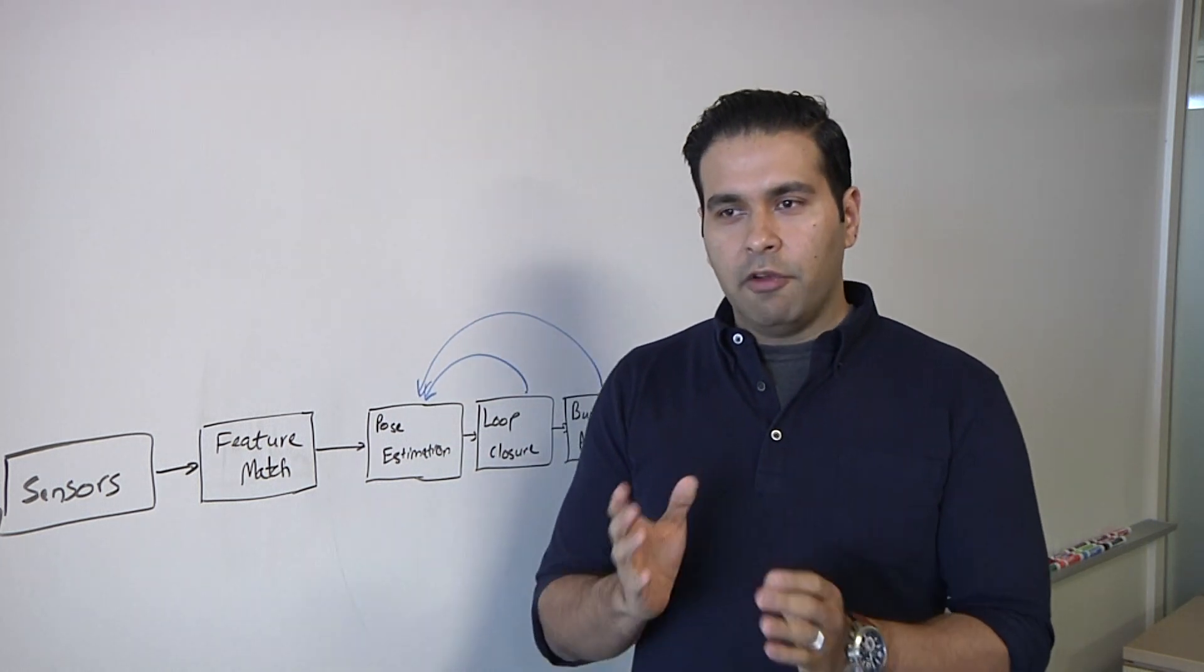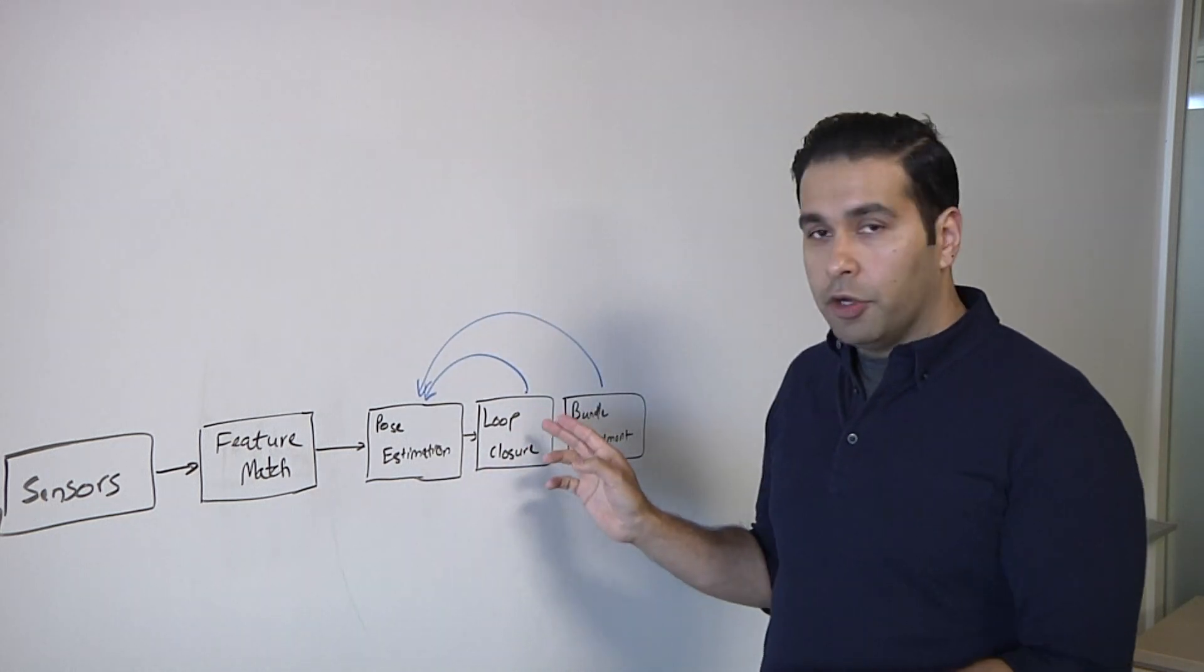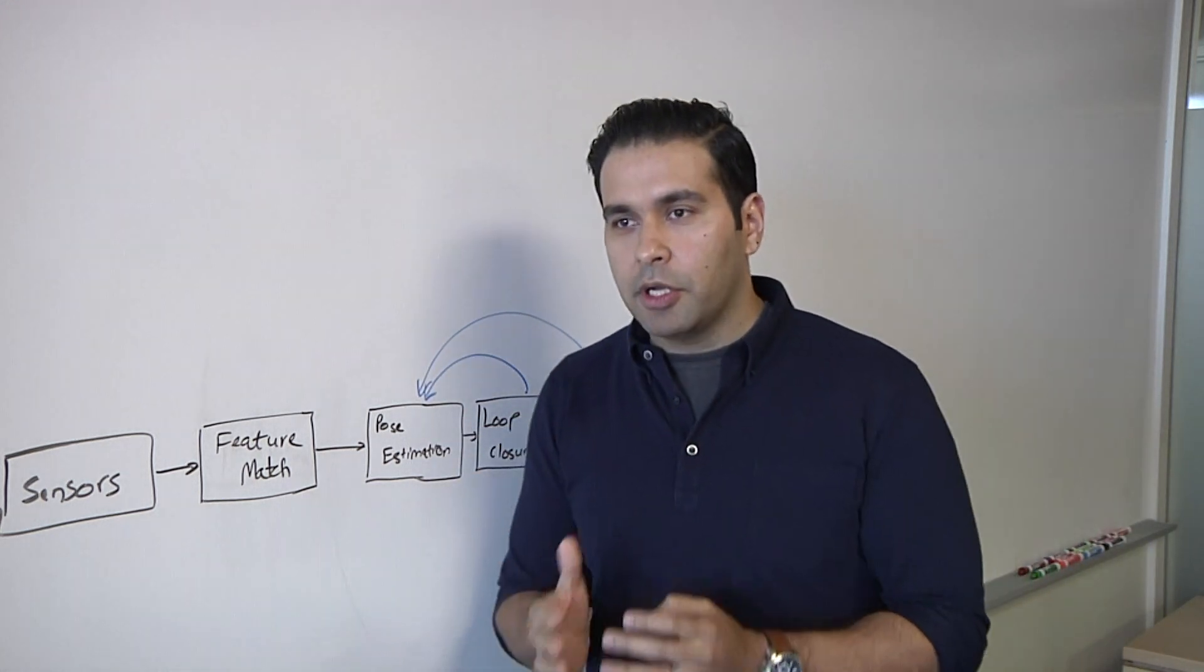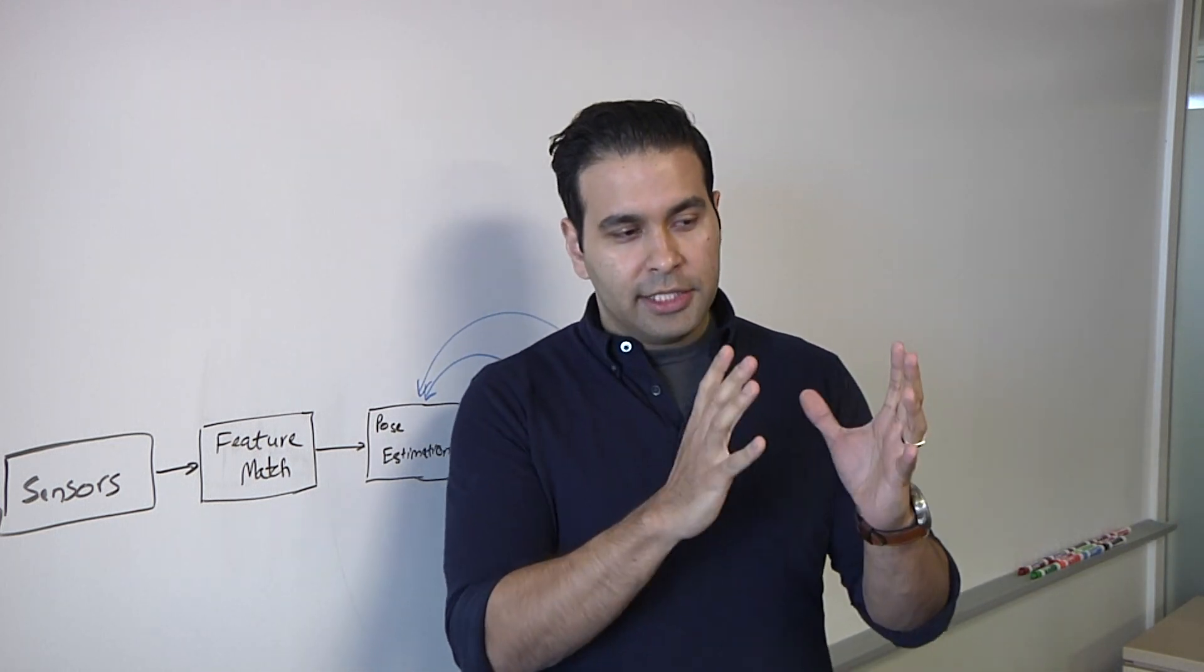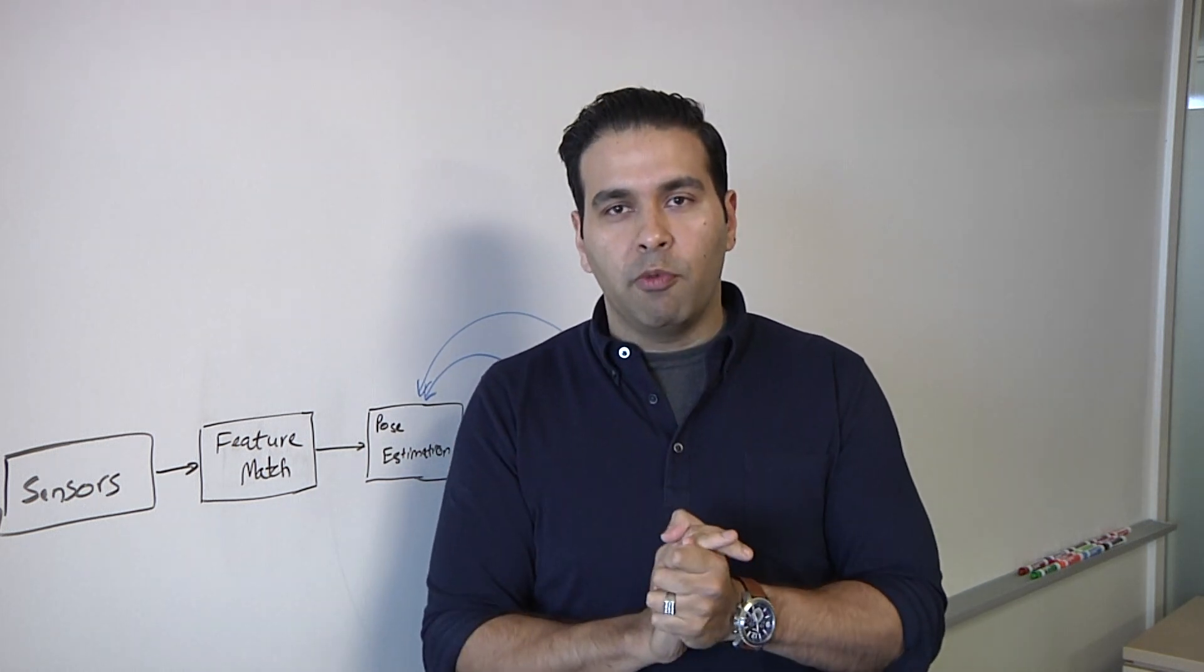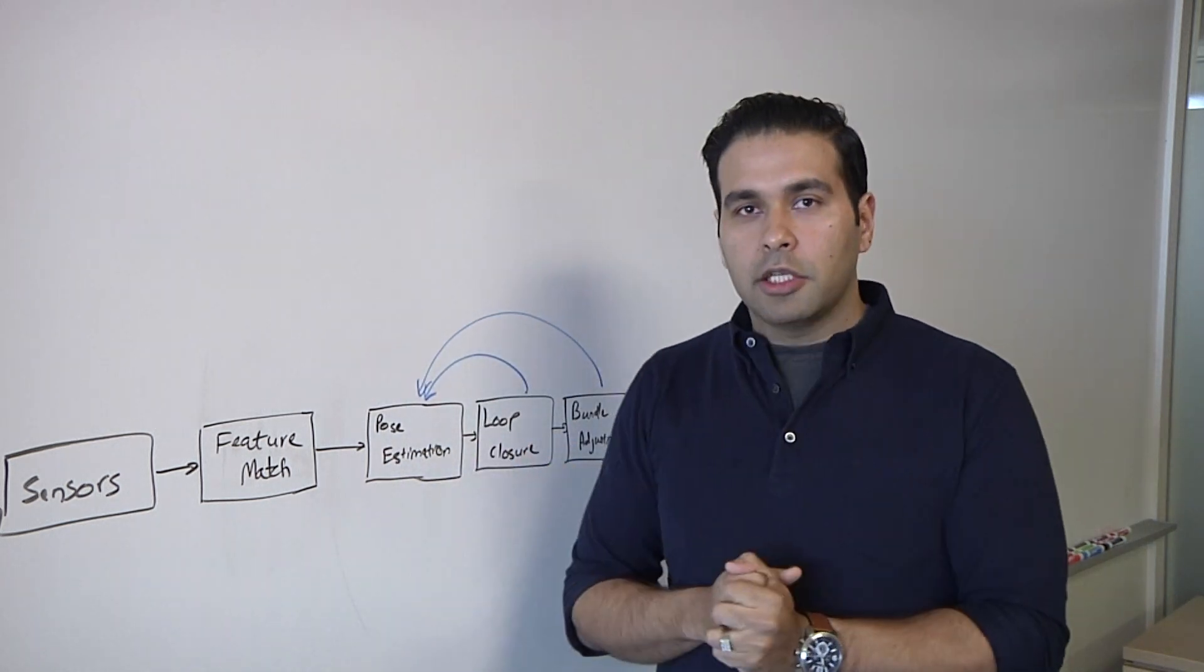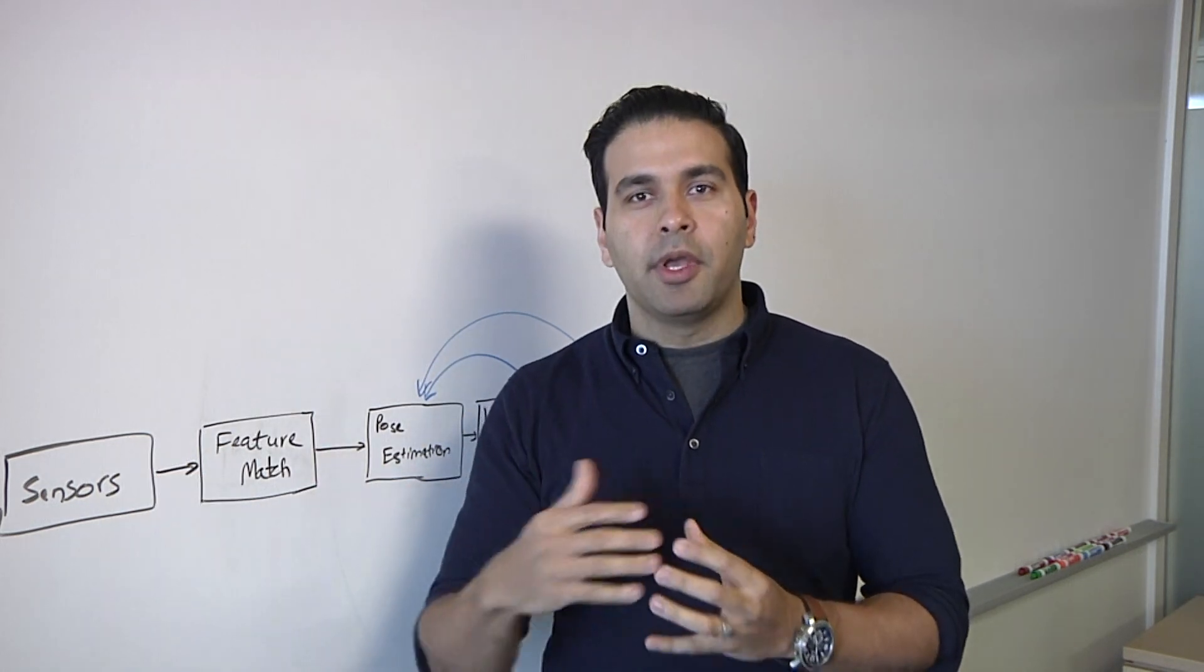So, visual odometry and VIO, they're somewhat similar in the sense that there's typically no feedback going from loop closure and bundle adjustment as compared to SLAM. Because visual odometry is more local problem in the sense that, okay, let's say I have frame one and frame two and I know how my camera, I'm just estimating how my camera has moved from one frame to the next.